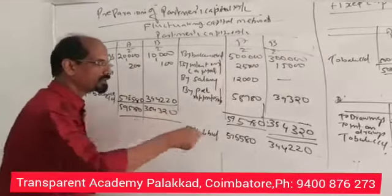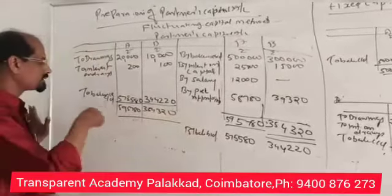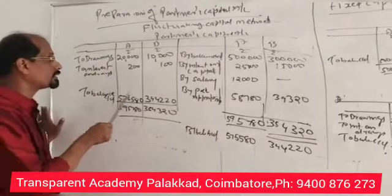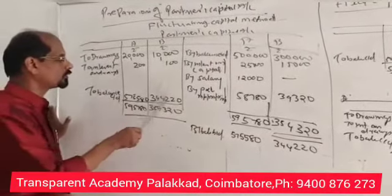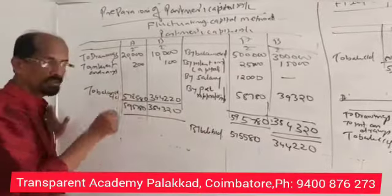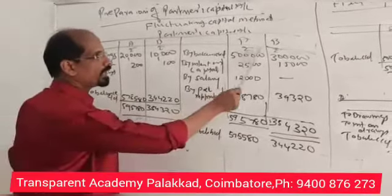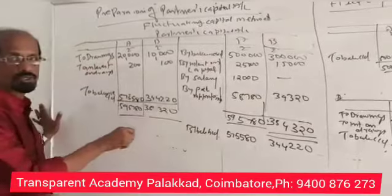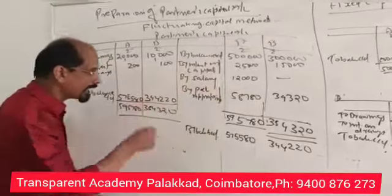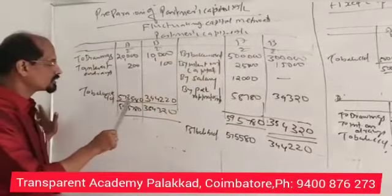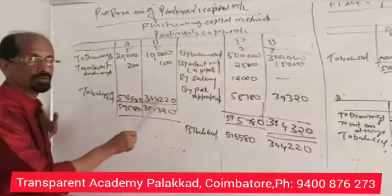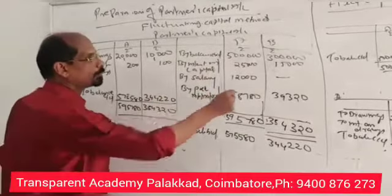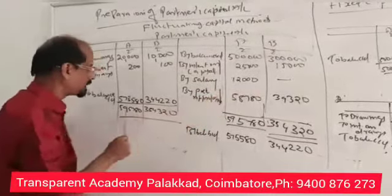When you balance the account, you get a closing balance of 5,75,580 for A and 3,44,220 for B. The opening capital was 5,00,000 and 3,00,000. This is the closing capital after making all these adjustments — the closing capital is different from the opening capital.